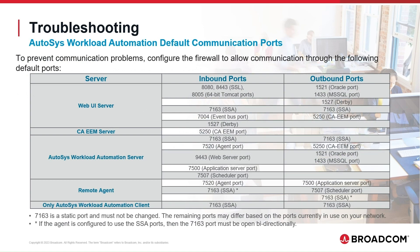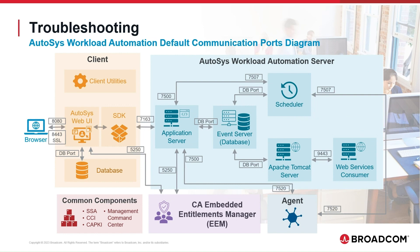These are the Autosys Workload Automation default communication ports. To prevent communication problems, configure the firewall to allow incoming, outgoing, or both types of communication through the designated ports. Port 7163 is a static port and must not be changed. The remaining ports may vary under allowed ranges depending on the ports currently in use on your network. This is the Autosys Workload Automation default communication ports diagram. The DB port is the port you have defined to communicate with the database.